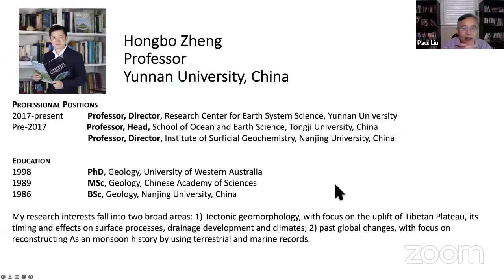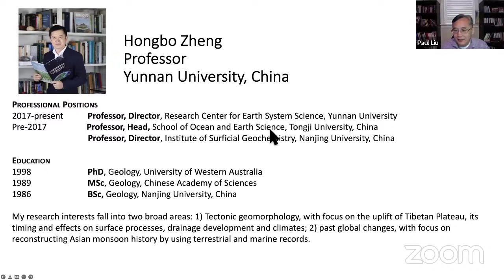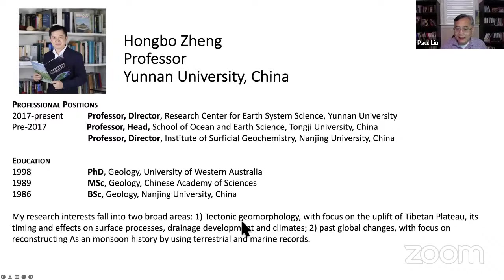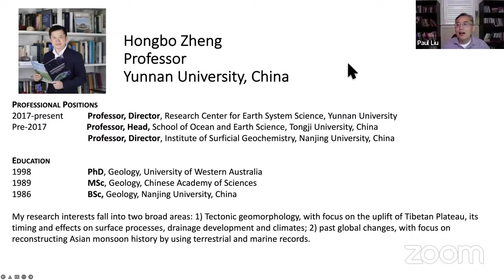Professor Hongbo is a university professor at Yunnan University and also director of the Research Center for Earth System Science. He is head of the School of Ocean and Earth Science, and previously was head at Tongji University. He graduated from Nanjing University and received his PhD from the University of Western Australia. His research spans two areas: tectonic geomorphology focused on the uplift of the Tibetan Plateau, and past global change focused on reconstructing Asian monsoon history.